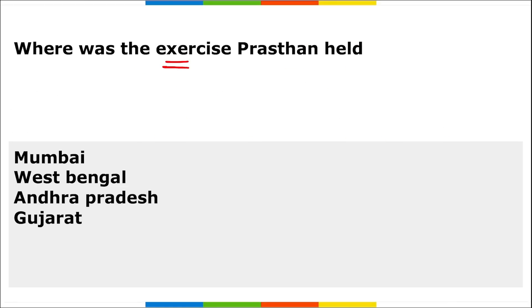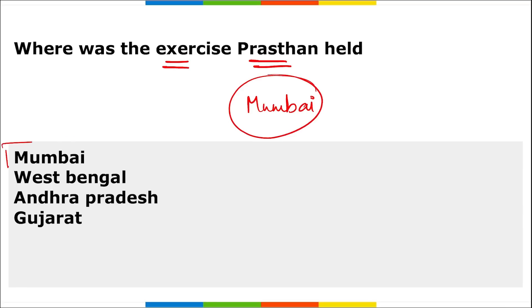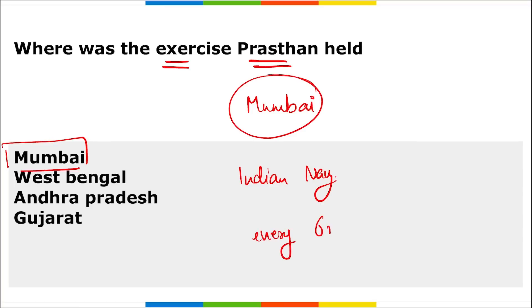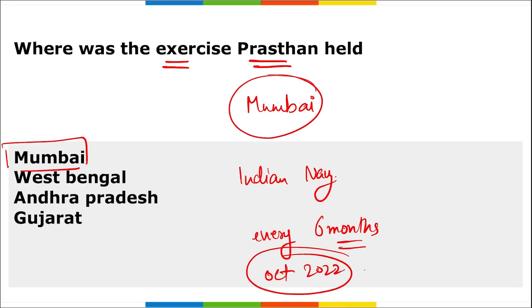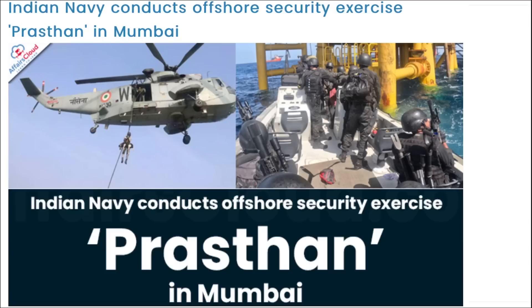Exercise Prasthan was held in Mumbai. It was conducted by the Indian Navy. It is an offshore security exercise called Prasthan. It is a biannual coordinated exercise held in Mumbai, Maharashtra — meaning it is held every six months. The previous Prasthan exercise was conducted in October 2022, and the location of that previous exercise was Visakhapatnam, Andhra Pradesh. The Indian Navy conducted this offshore security exercise Prasthan in Mumbai.